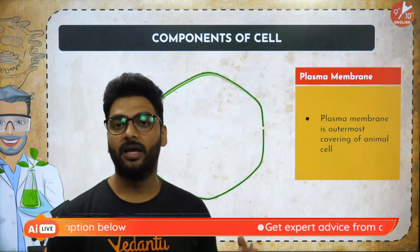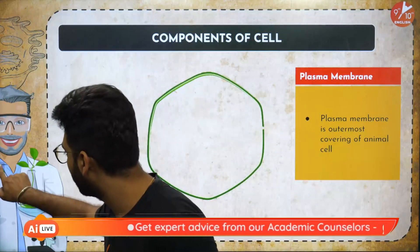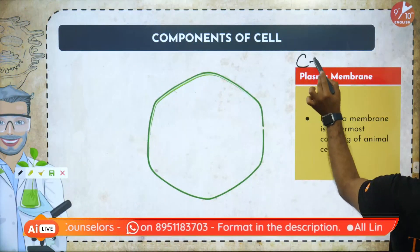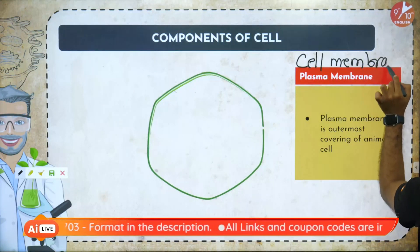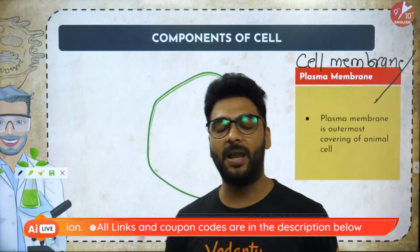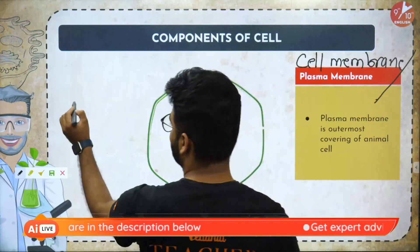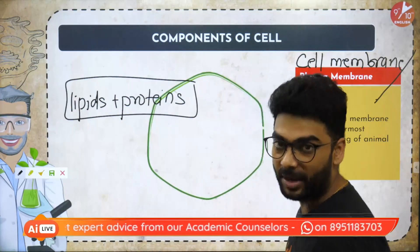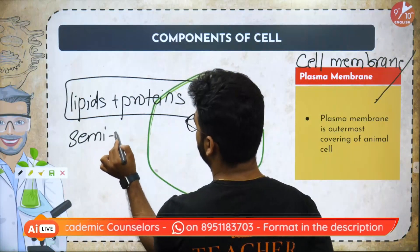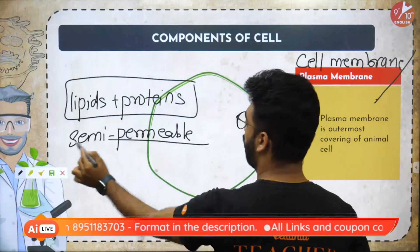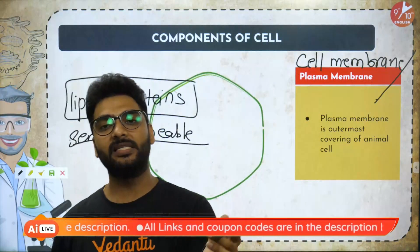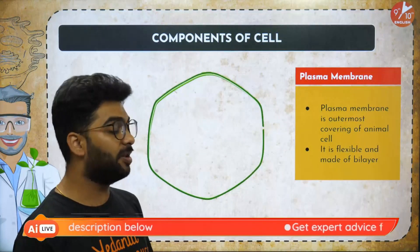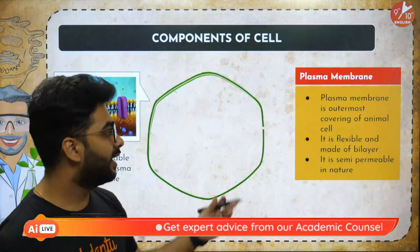Now we come to the next component — the cell membrane. The plasma membrane and cell membrane are one and the same. It is made up of a bi-layer of lipids and proteins. It is semi-permeable and is present in all cells, whether plant or animal. It is also the outermost covering of animal cells and is flexible in nature.